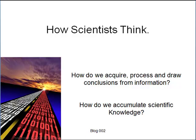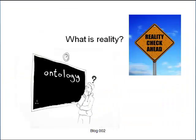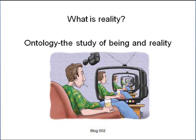The first thing we have to confront is the question: what is reality? This is not a trivial question and one that is at the core of understanding nature. In philosophy this is called ontology. Ontology is the philosophy of being and of reality.